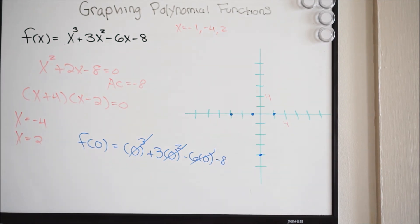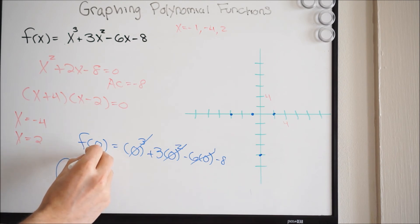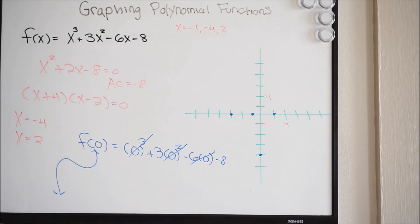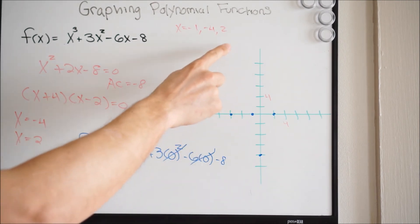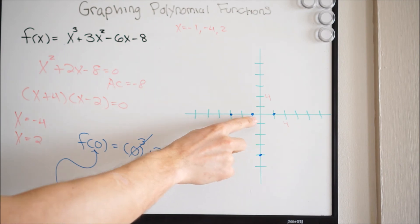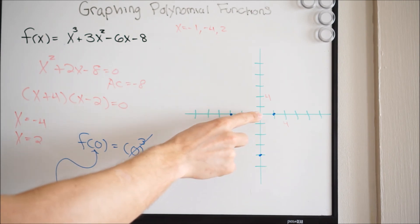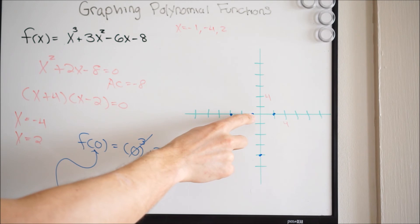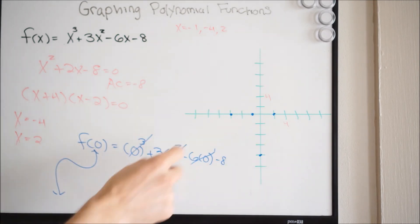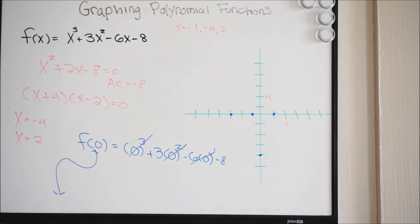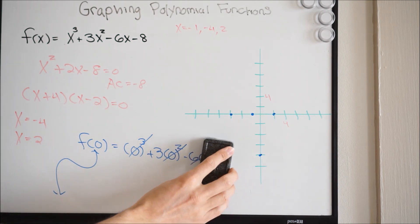Now we already determined what the end behavior of the graph is going to look like. We're going to have something like this. Our next step — we need to determine how high this function is going up in between these two points, and we're going to do the same thing for down here — how low is it going before it comes back up?